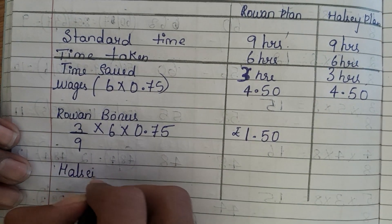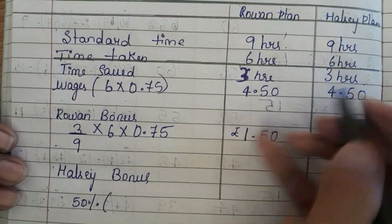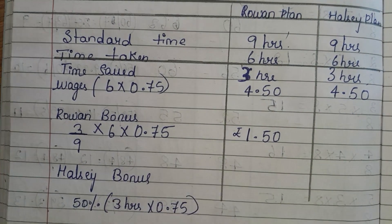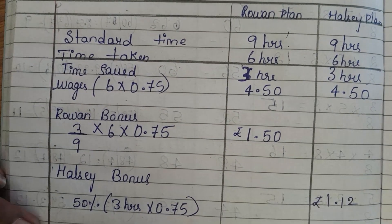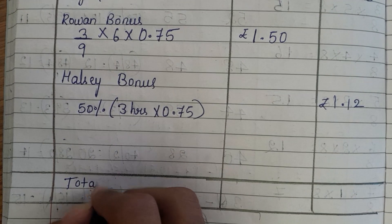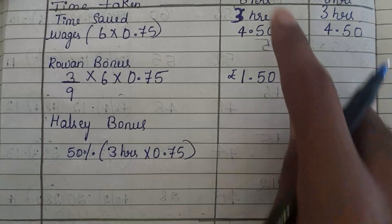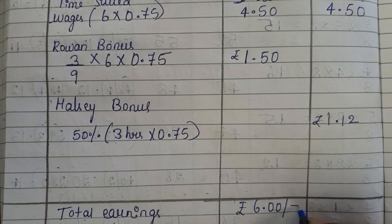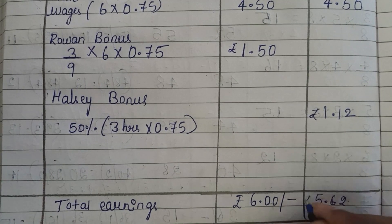Next, we need to calculate Halsey bonus. Halsey bonus is 50% of time saved. Time saved is 3 hours multiplied by rate 0.75, so we will get 1.12. Now the total earnings: for Rowan plan, 4.5 plus 1.50 gives 6 rupees. For Halsey, 4.50 plus 1.12 gives 5.62 rupees.